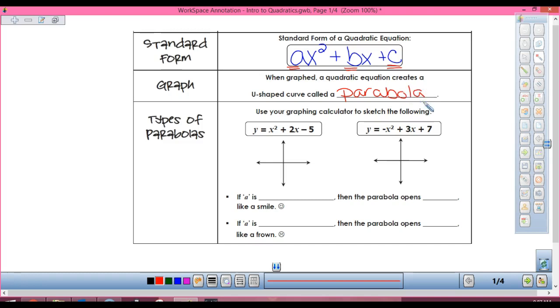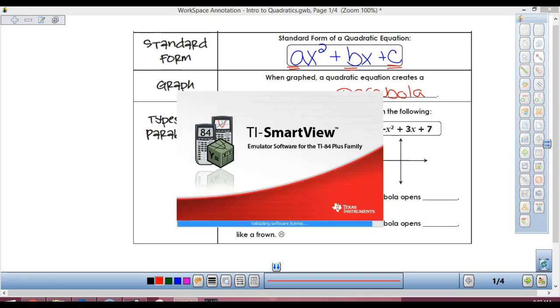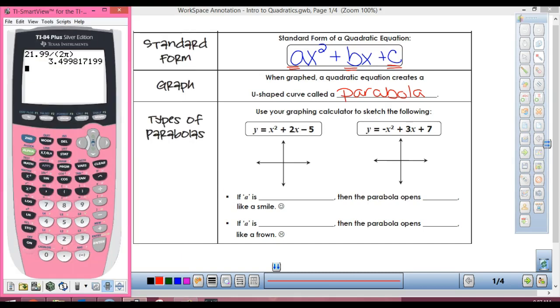You can pronounce it parabola. Alright, so this next part says use your graphing calculator to check these out. We're not going to do that. Actually, I will, and I'll show you what these would look like in our calculator. So if I go to y equals, I'm going to take a few things out here, and I put in x squared plus 2x minus 5. Now you graph - okay, that's what my parabola looks like.